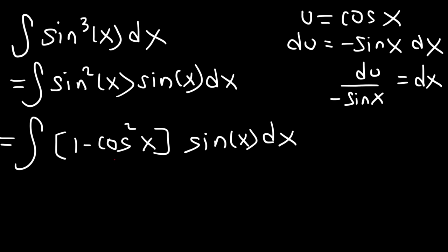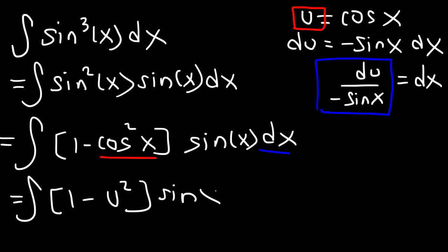Let's replace cosine with the u variable and replace dx with du divided by negative sine. So we have the integral of 1 minus u squared times sine x times du divided by negative sine x.